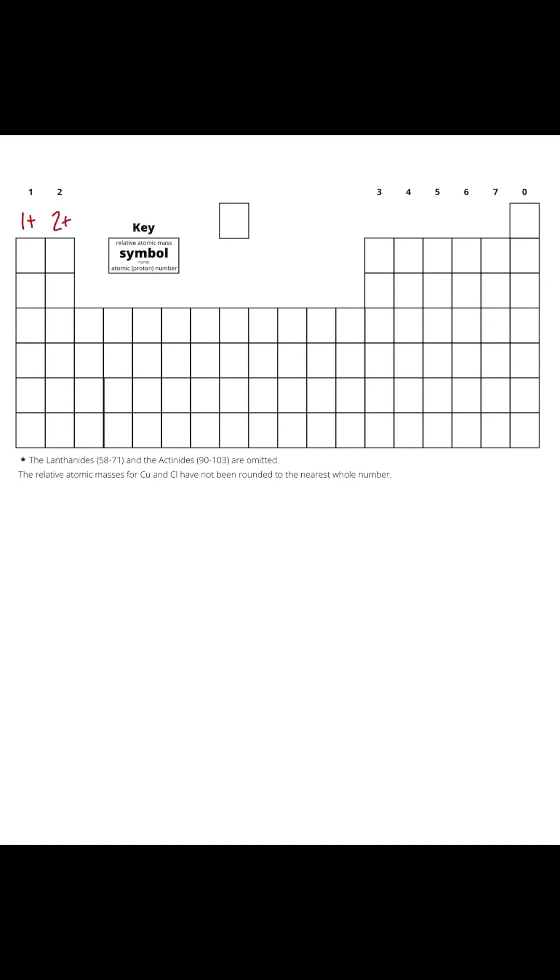Group four you don't really come across. Group five, similarly you don't really come across, but if you do it's three minus. Group six is two minus, and group seven is one minus. For example, if you had lithium which is here, it would be a charge of one plus. You don't really write ones, so you'll just keep it as Li plus.